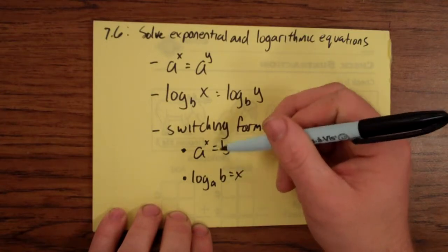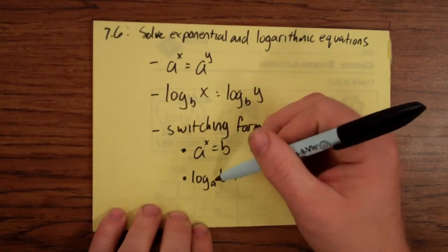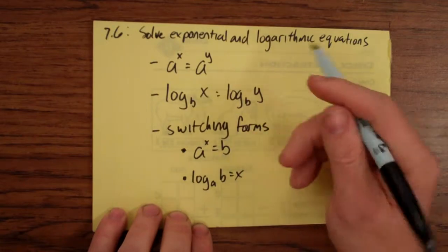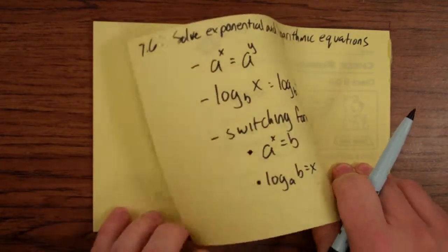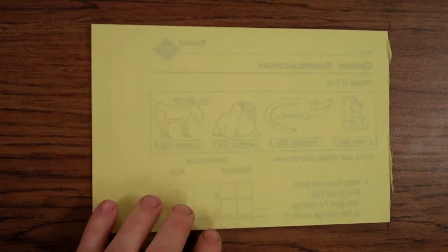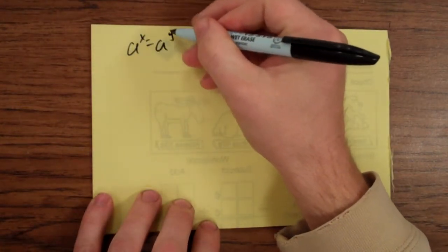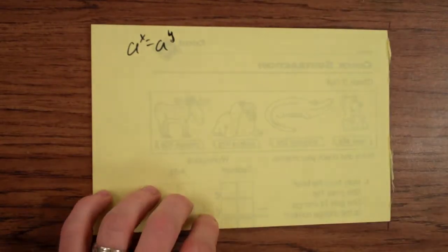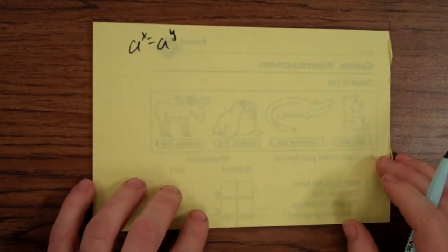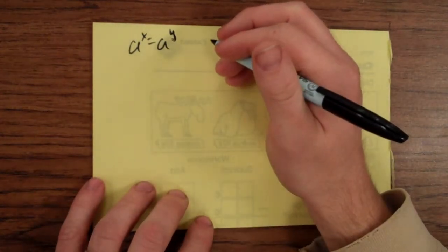So this would be what I would call the third form, where you're switching between exponential and logarithmic form, or going the other way. So let's talk about that first kind, where a to the x is equal to a to the y. And I just want to talk about the concepts really quickly. We'll do many examples because those are for the sample problem videos.